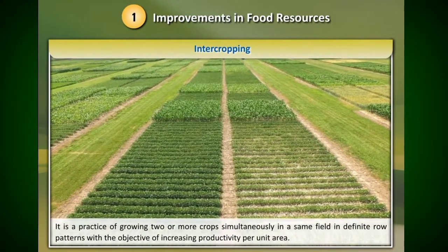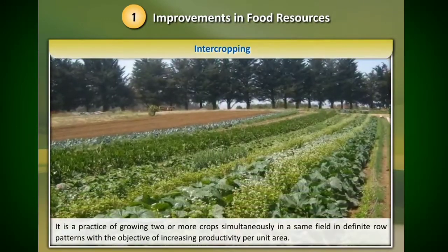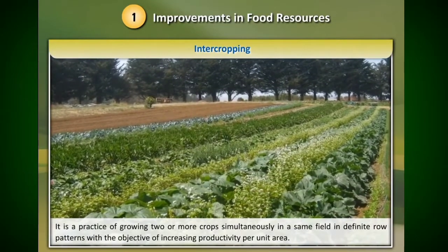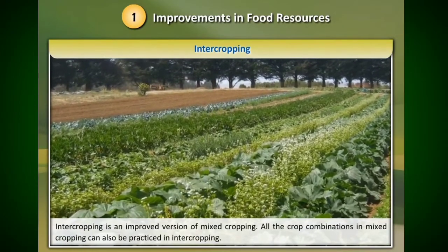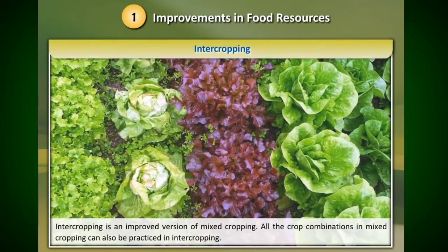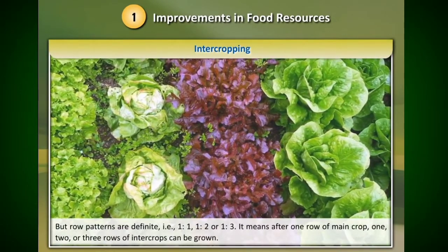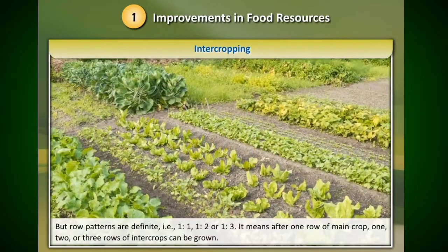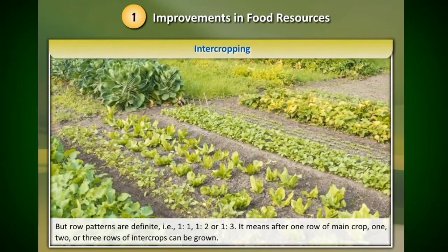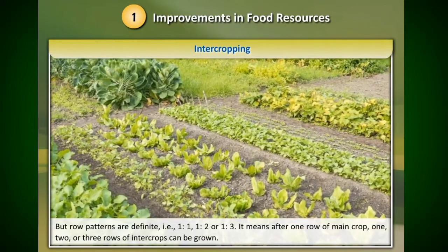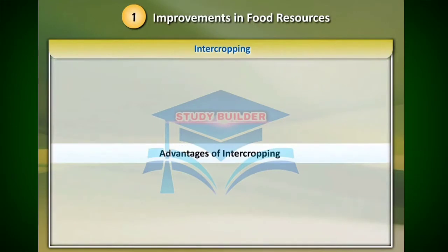Intercropping is a practice of growing two or more crops simultaneously in the same field in definite row patterns, with the objective of increasing productivity per unit area. Intercropping is an improved version of mixed cropping. All the crop combinations in mixed cropping can also be practiced in intercropping, but row patterns are definite — that is, one to one, one to two, or one to three. This means after one row of the main crop, one, two, or three rows of intercrops can be grown.